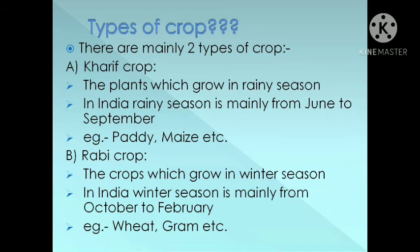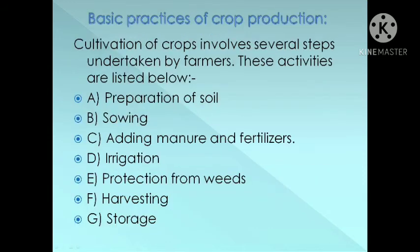There is also one more type of crop which is not given in our book — that is Zaid crops. The crops which are grown in summer season are called Zaid crops. In India, the season is mainly from April to June. The examples of Zaid crops are watermelon, muskmelon, etc.